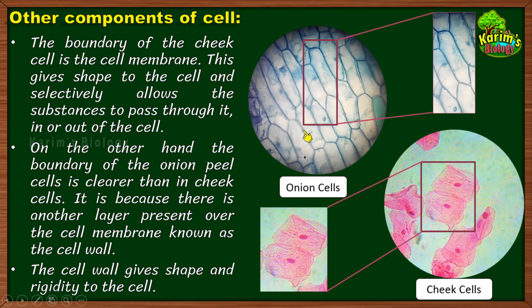Why should plant cells have this tough layer called cell wall? Living organisms are exposed to different types of environments — cold, heat, mechanical damage. In the case of animals, if they are exposed to environmental threats like high temperature or chemicals, they can move to a safer place. But plants are stationary — they are rooted in the soil and cannot move. So if plants are exposed to harsh environmental conditions, the cells may get damaged. Therefore, plants have developed a cell wall to protect themselves from harsh weather conditions and also to protect against invasion by microorganisms.